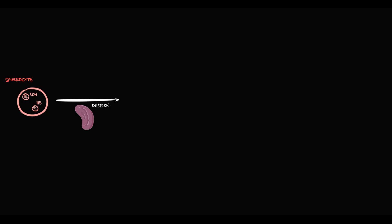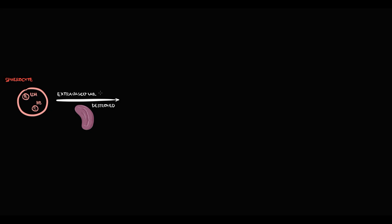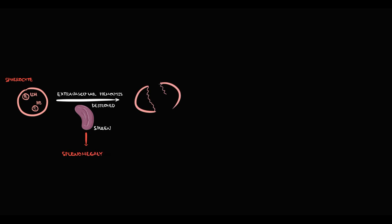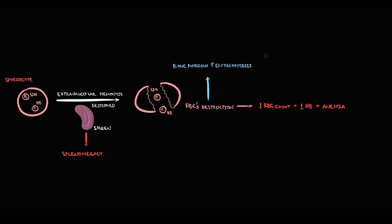Once they are stuck in the capillaries, they become an easy target for splenic macrophages. The destruction of red blood cells by splenic macrophages we call extravascular hemolysis. With time, extremely active extravascular hemolysis will cause splenomegaly. With destruction of red blood cells, the substances inside them — lactate dehydrogenase and hemoglobin — enter the blood. This causes decreasing red blood cell count and decreasing hemoglobin, which we call anemia. In response, bone marrow activates erythropoiesis to compensate, increasing red blood cell precursors called reticulocytes.